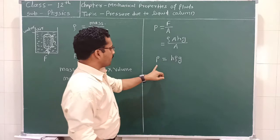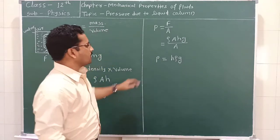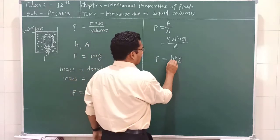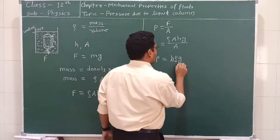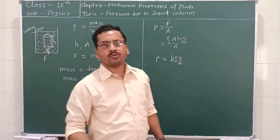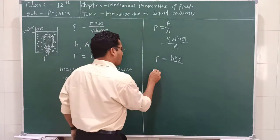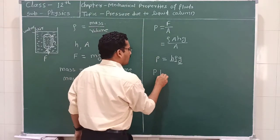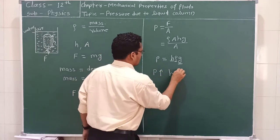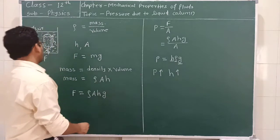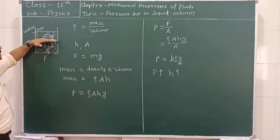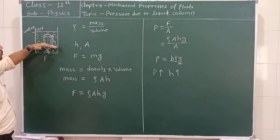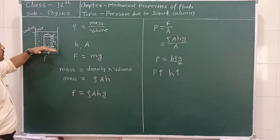Now, on which factors does this pressure depend? This pressure depends upon height, density of the liquid, and acceleration due to gravity. It means that pressure increases as the height increases. Height is measured from the surface — as we go in the downward direction, the height increases and the pressure also increases.